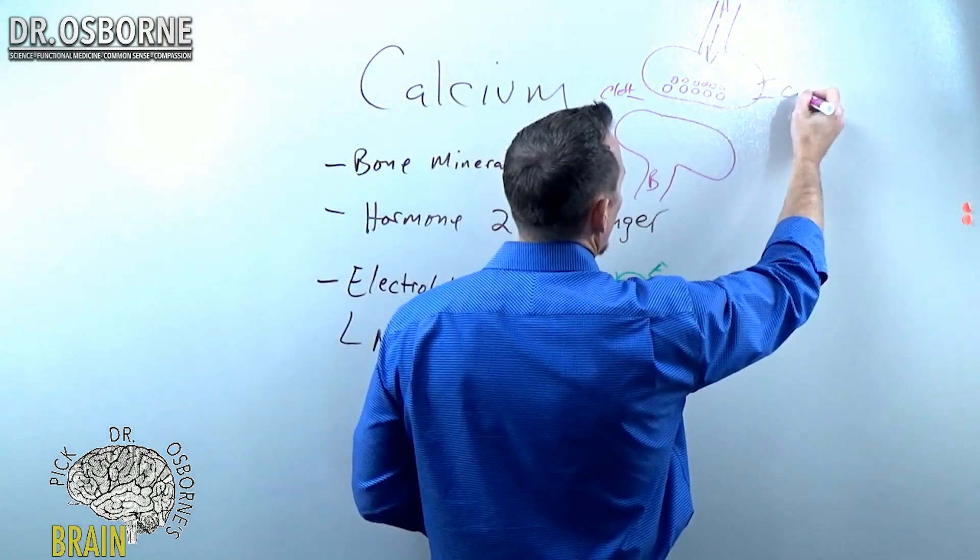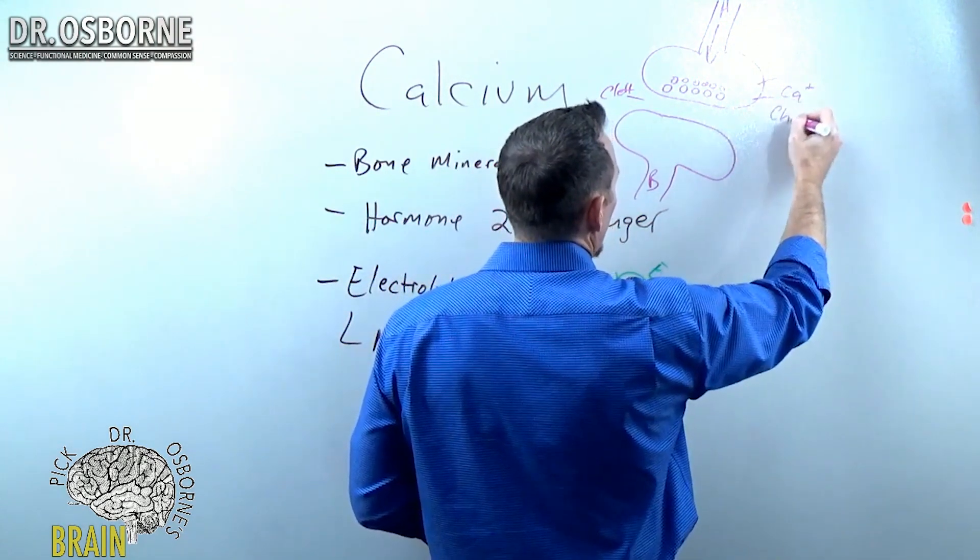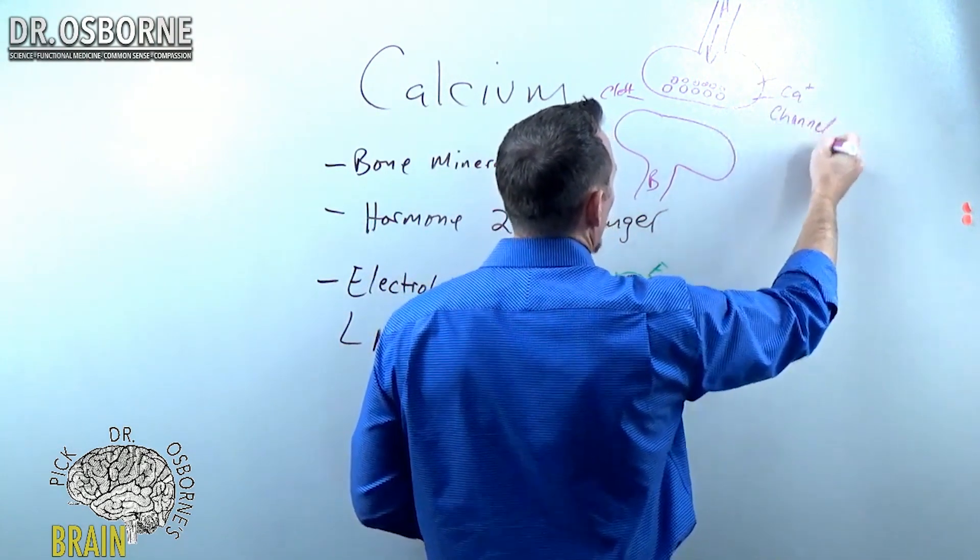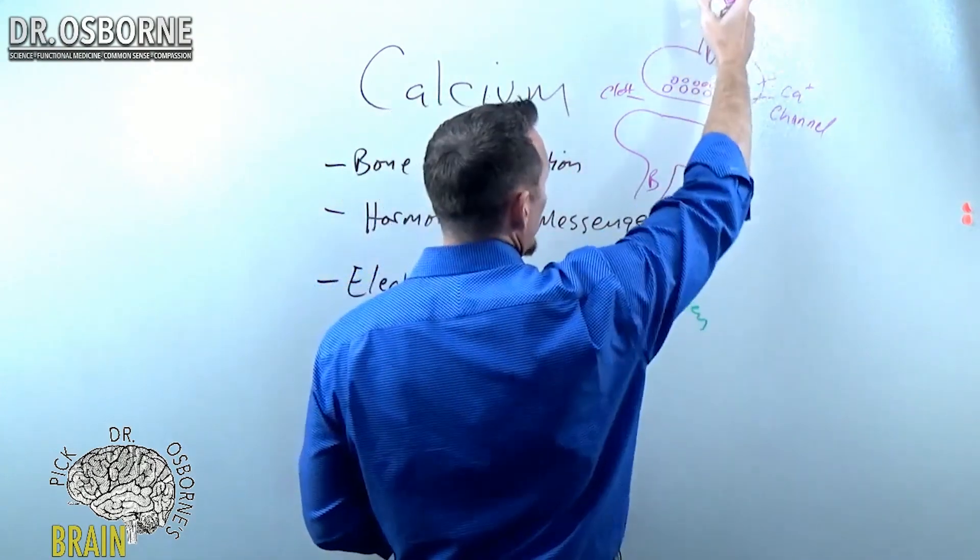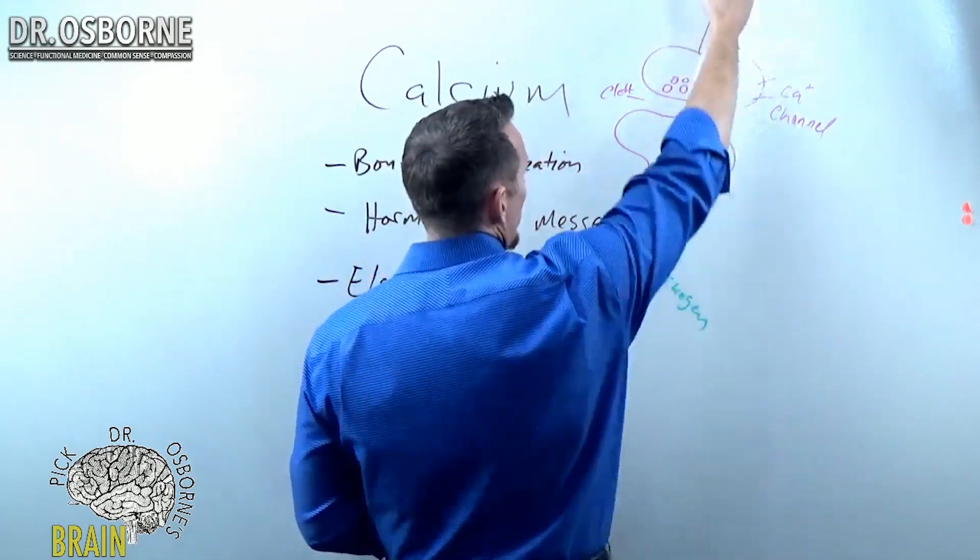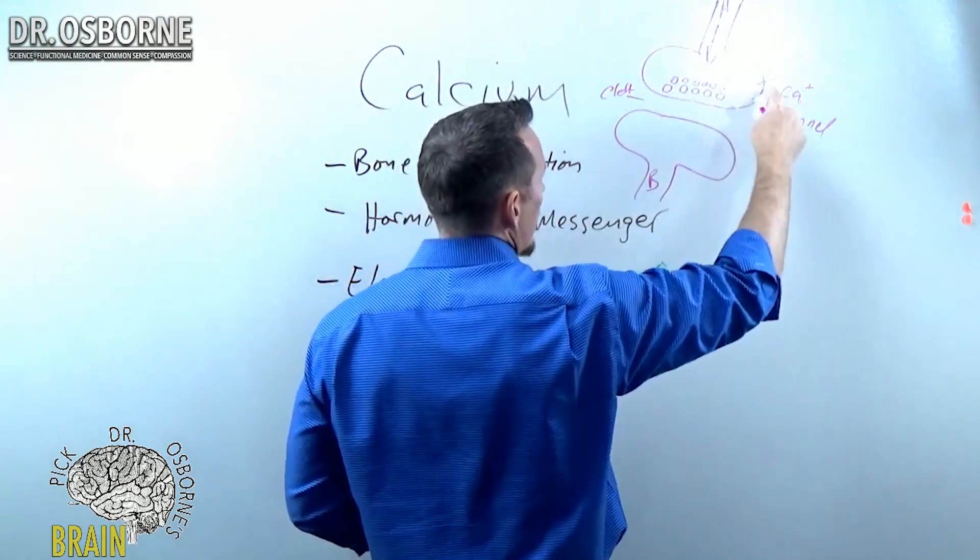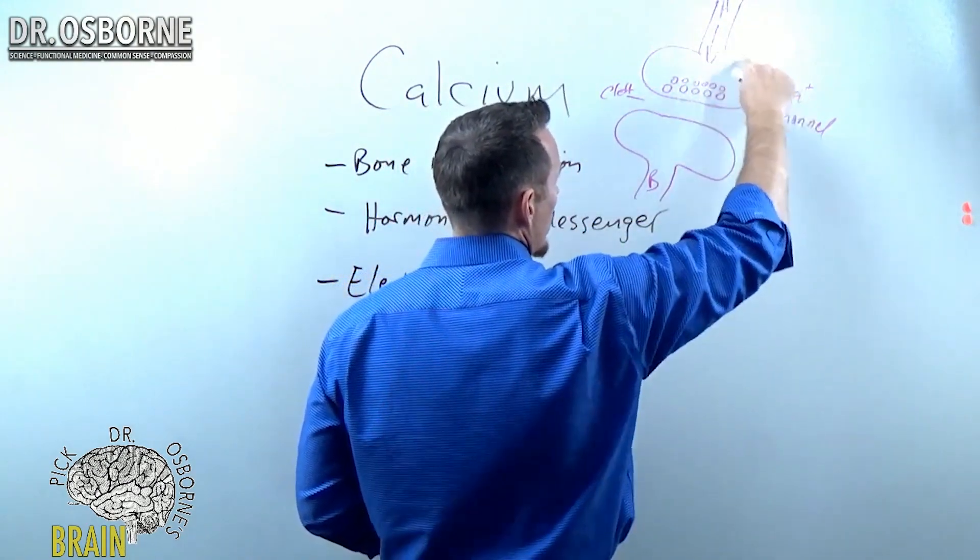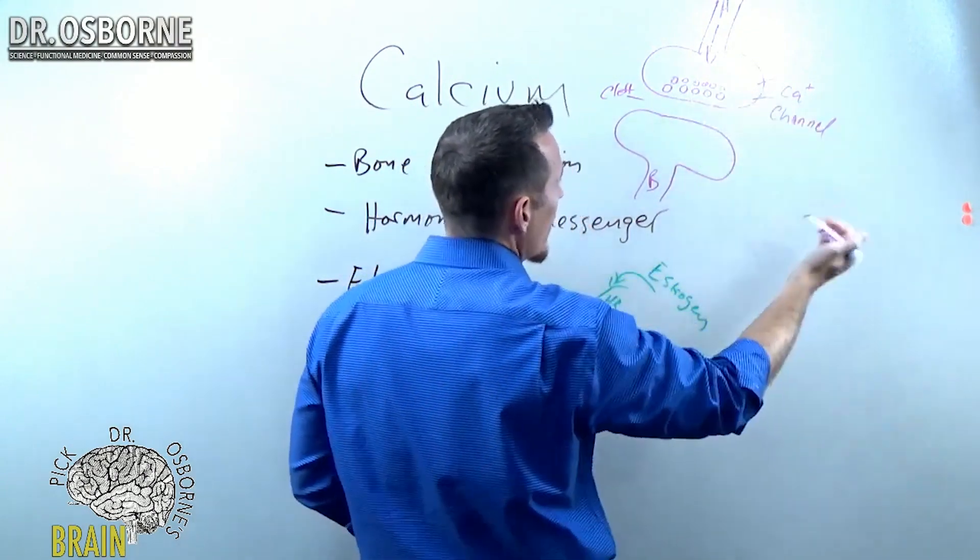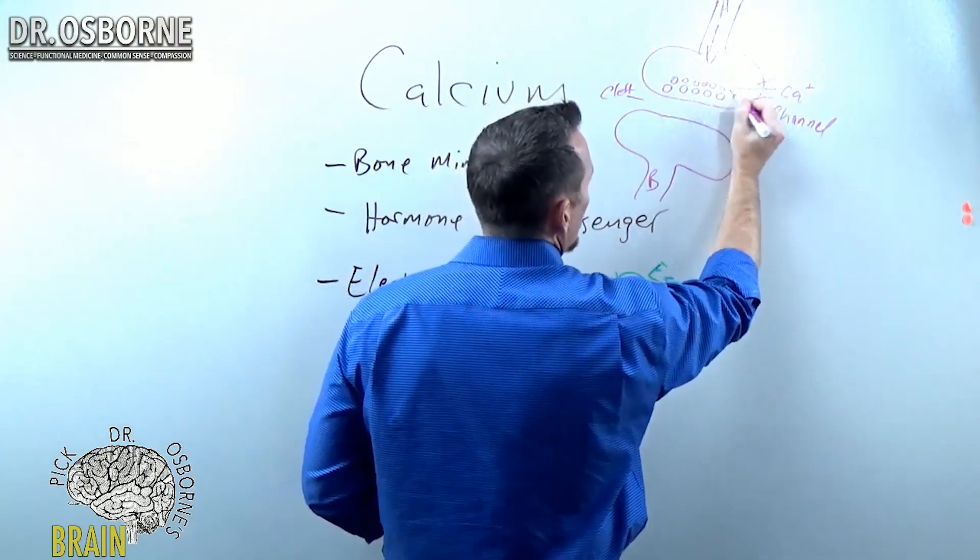What's at the end of this nerve is something called a calcium channel. So when the electrical impulse travels down the nerve, and I didn't draw the whole nerve, but imagine this long wire coming down. And when it hits, when that electrical depolarization hits that calcium channel, calcium floods in to the nerve cell.